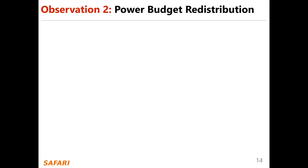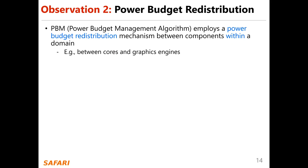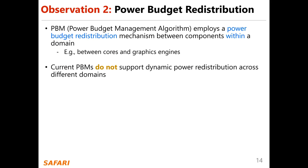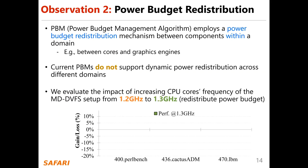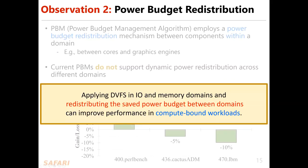Our second observation is about the importance of power budget redistribution across domains. PPM employs power budget redistribution mechanism between components within a domain, for example between cores and the graphics engine within a compute domain. Current PPMs do not support dynamic power distribution across different domains. We evaluate the impact of increasing CPU cores frequency of the MD-DVFS setup from 1.2 to 1.3 GHz when utilizing the redistributed power budget. Compared to the baseline without MD-DVFS, the performance of the first workload was improved by 8%, and the second and third workloads were degraded by 5% and 10%. We conclude that applying DVFS in the IO and memory domains and redistributing the power budget between domains can improve performance in compute-bound workloads.